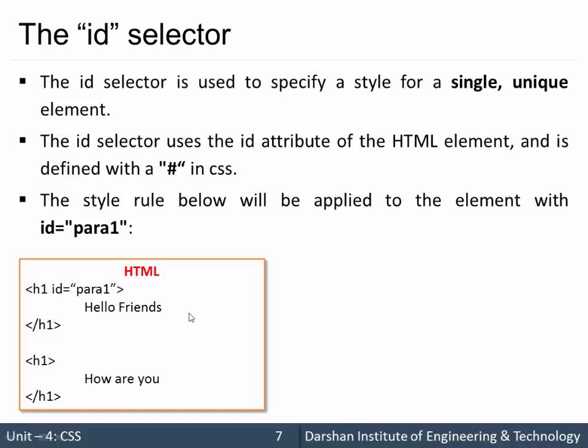For example, this is our HTML page and there are many h1 tags — two h1 tags — and we only want to specify the CSS property to the first element. Now if we are using element targeting and we are using h1 as a selector, in that case all the properties we write inside that selector will be applied to both h1s. But what I want is to specify the CSS attributes to only the first h1.